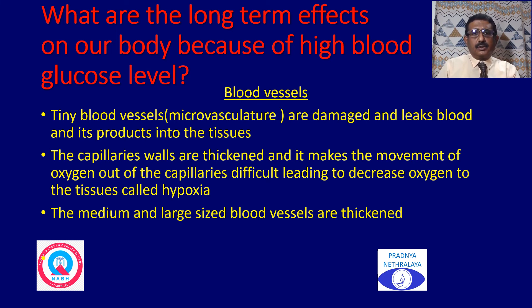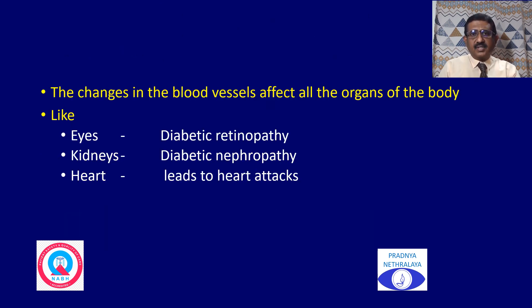In the long term, high blood sugar levels cause important changes in the blood vessels. Tiny blood vessels called microvaculature are damaged and leak blood and its products into the tissue. The capillary walls get thickened, making the movement of oxygen out of the capillaries into the tissue difficult, leading to decreased oxygenation in the cells, known as hypoxia. Medium and large blood vessels also get thickened. These changes affect all organs — the eye (diabetic retinopathy), the kidney (diabetic nephropathy), and the heart (heart attack). Notably, the eye is the only organ where these changes can be easily visualized.